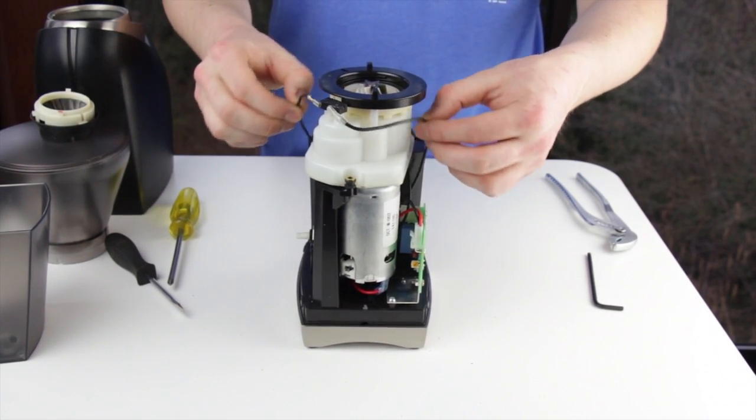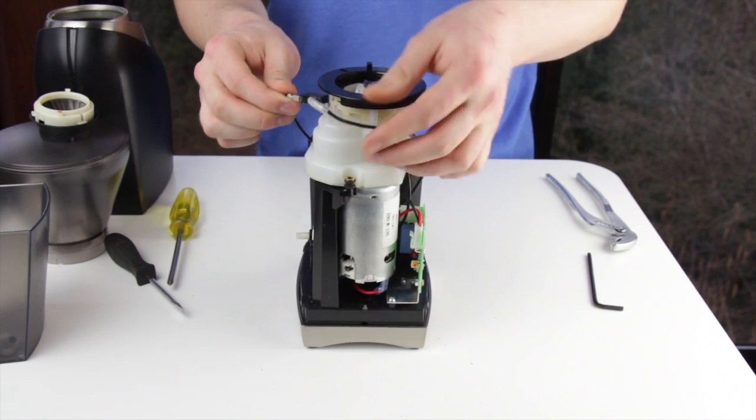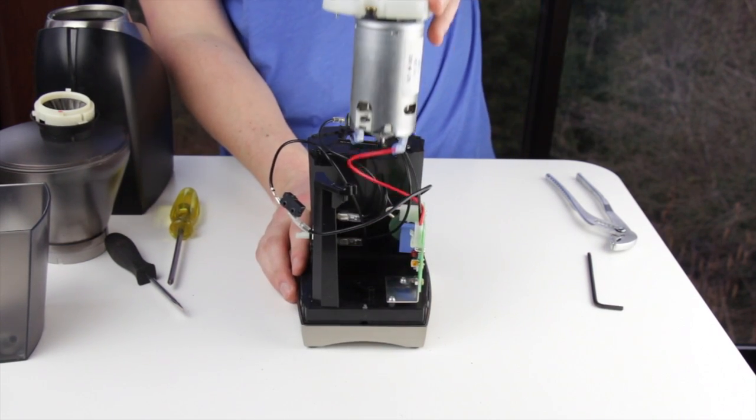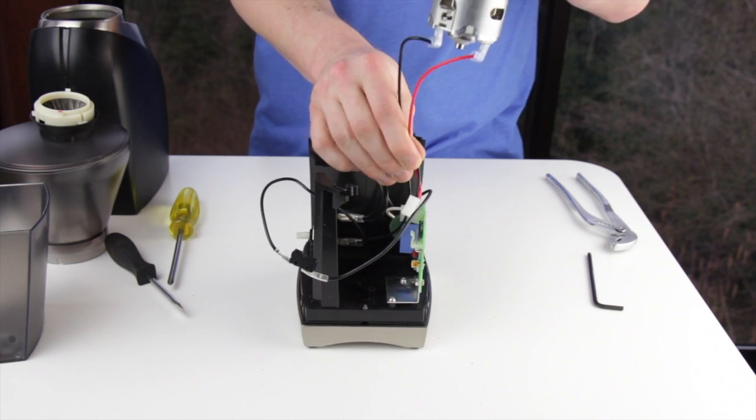The safety switch needs to be removed. Lift it up and off of the two posts and let it dangle to the side. Unplug the motor from the circuit board.